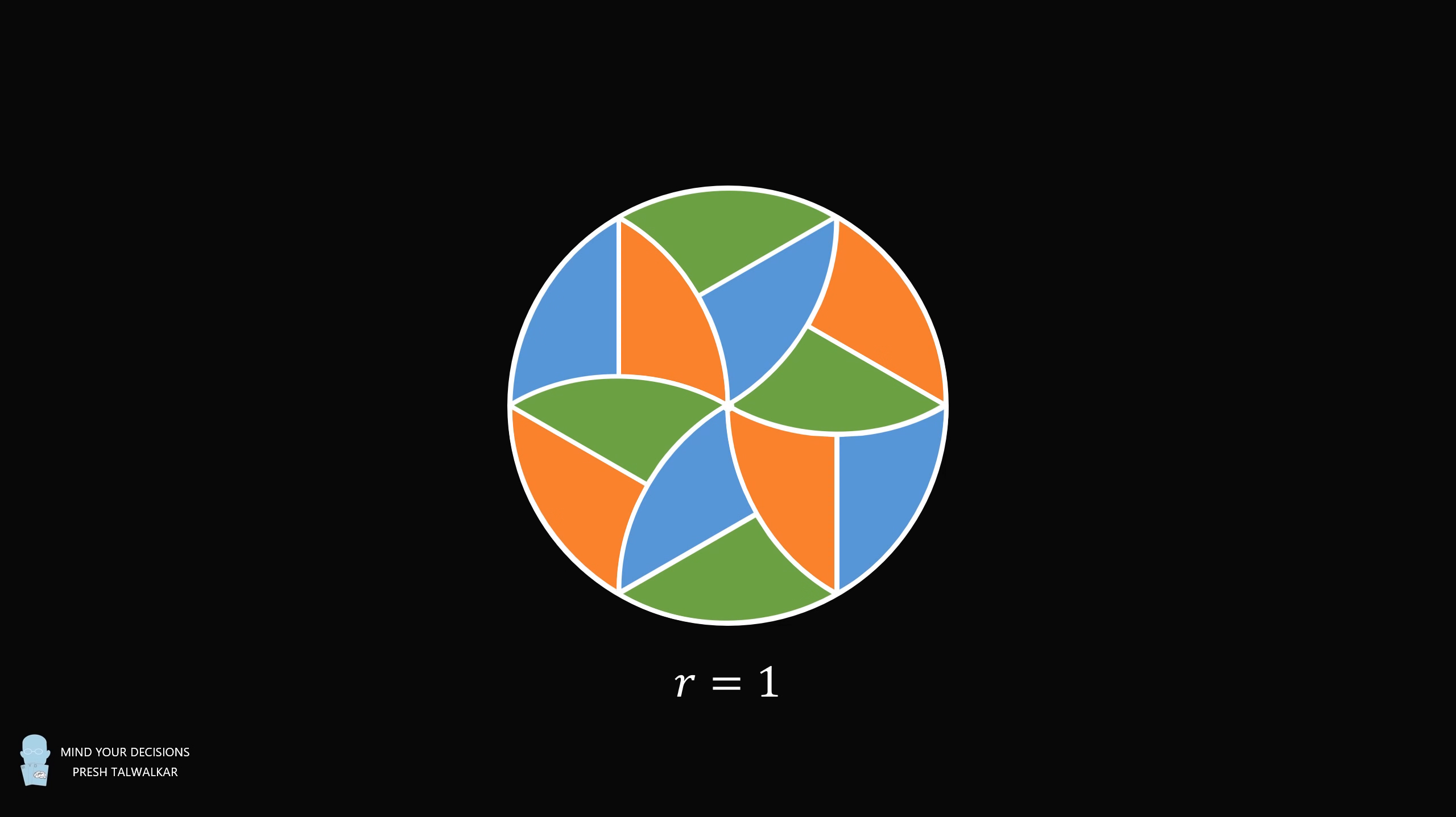Hey, this is Presh Talwalker. A circle with the radius equal to 1 is divided into 12 congruent regions as shown. What is the perimeter of a single region? I thank Chan Lai-Li, whose video explained the solution to this problem.